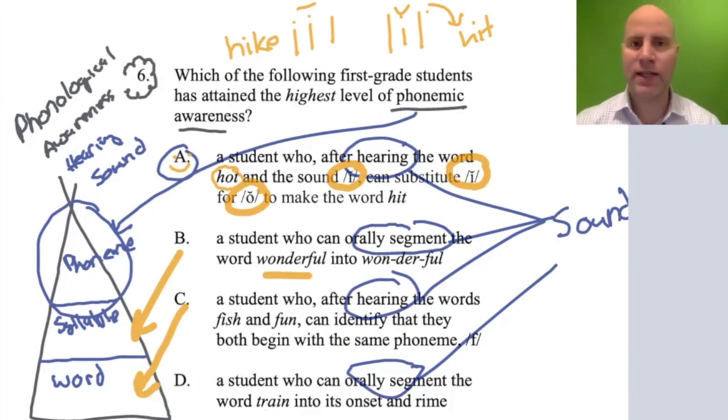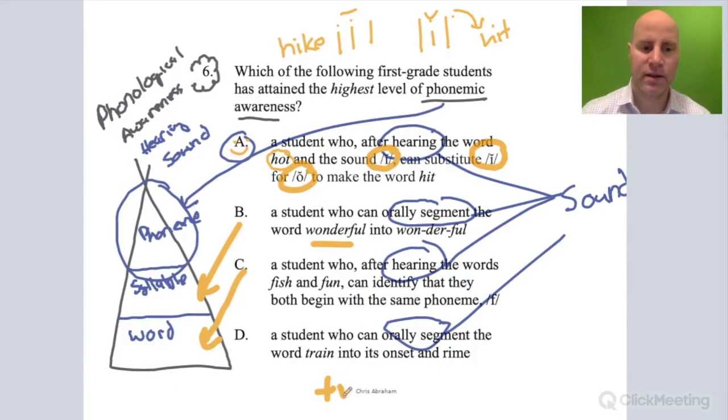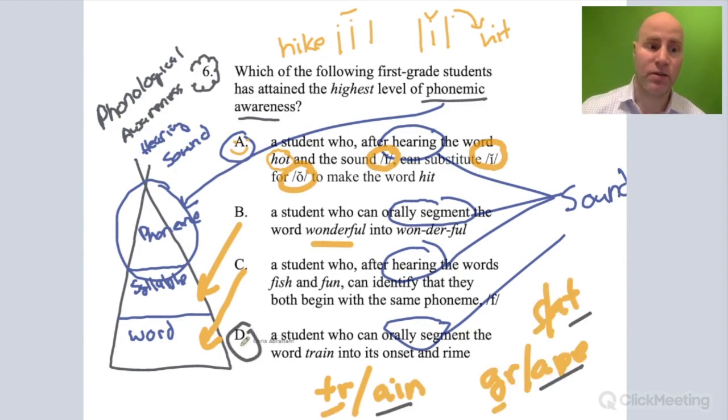D has to do with train, and in train we're breaking the word up into its onset - the beginning part of the word - and its rime. This one does involve phonemic awareness, but it's not the highest level of phonemic awareness. When we think about it, phonemic awareness has a lot of different levels.